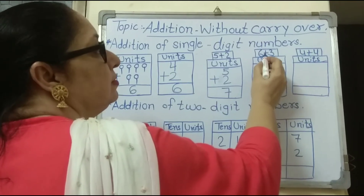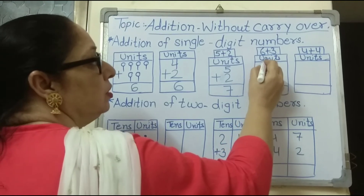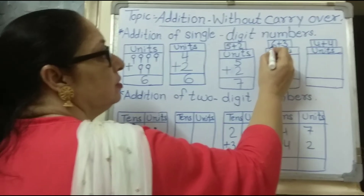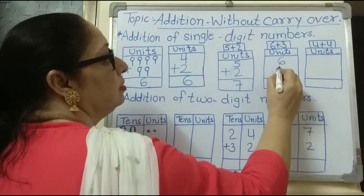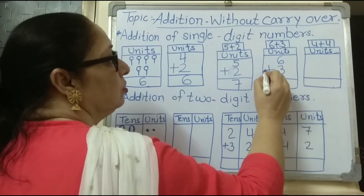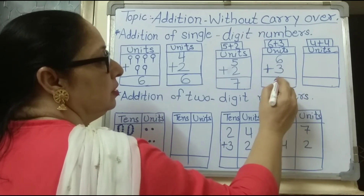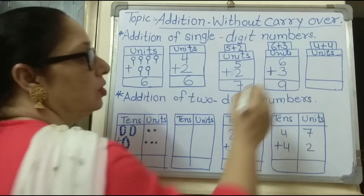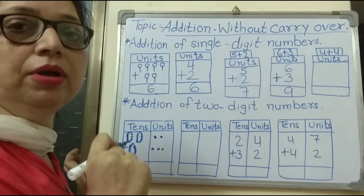The next number is six plus three. The column is units. Write the numbers in the unit column — first number is six, second number is three. Draw the sign. Six plus three is equal to nine. Six and three added together gives nine.